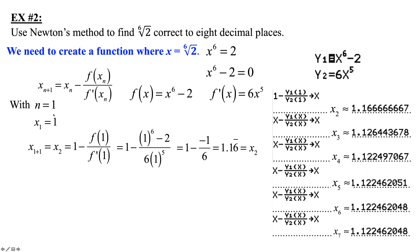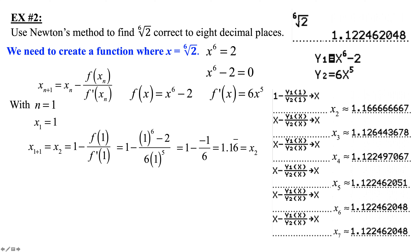This is how the calculator does the same thing: we give it a starting number and keep working until it reaches the zero. On the home screen, the sixth root of 2 is 1.12246204, and that's how the calculator finds this value.